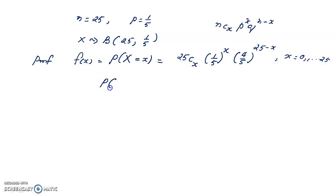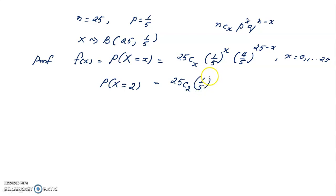To find P(X = 2), we substitute x = 2: P(X = 2) = 25C2 · (1/5)^2 · (4/5)^(25−2) = 25C2 · (1/5)^2 · (4/5)^23.